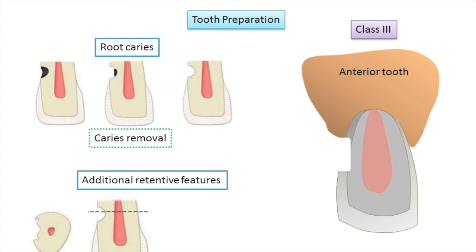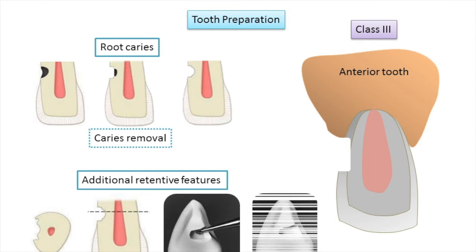When restoring a large Class 3 lesion or one in the root portion of the tooth, retention grooves can be placed in the gingival region and retention curves in the incisal region as part of the retention form to provide additional retention at the time of bonding.